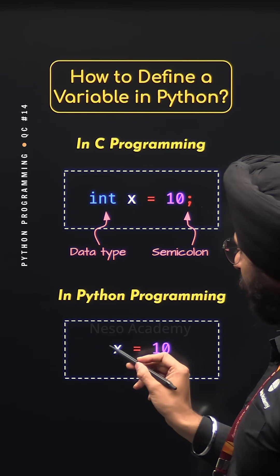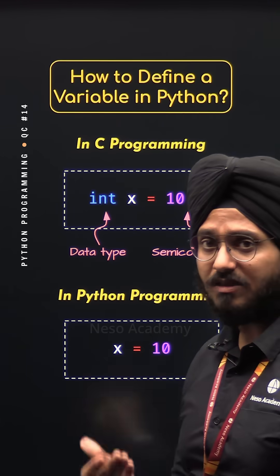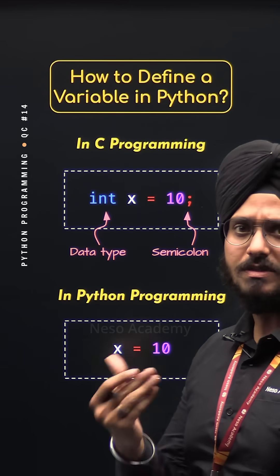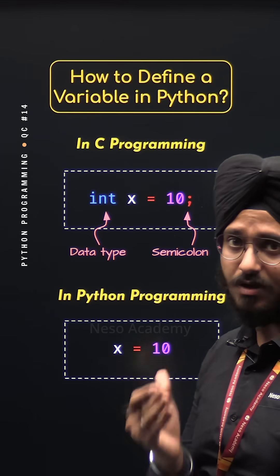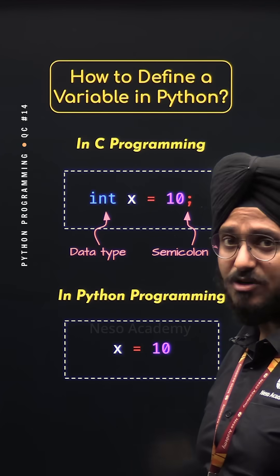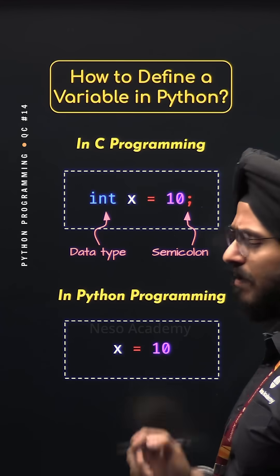Notice that we do not have to specify the data type in case of Python programming because Python is dynamically typed language. It automatically determines the type of the variable at run time. And there is no need to put the semicolon at the end of the statement as well. So this is how we can define a variable in Python.